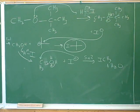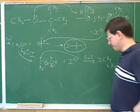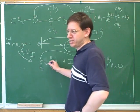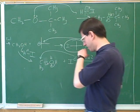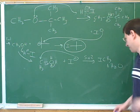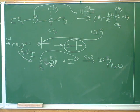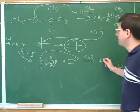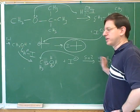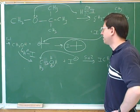The oxygen ultimately got completely kicked off the carbons and left as water. How did the oxygen keep turning into a leaving group? Because it kept getting protonated. We know that when you protonate something, that makes it into a better leaving group. So what types of functional groups did we end up with? Two haloalkanes.